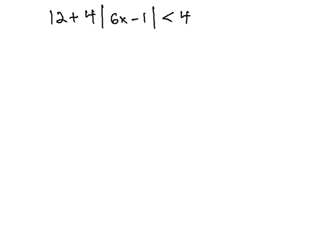In this case, we have 12 plus 4 times the absolute value of 6x minus 1 is less than 4. We know to begin solving, we must first get the absolute value alone. We can't combine 12 and 4 because they're not like terms, so we'll subtract 12 from both sides of the inequality.